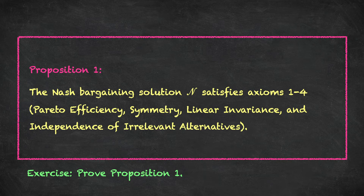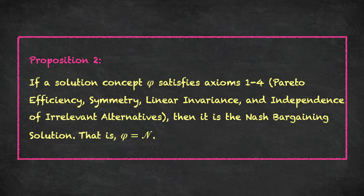What's more remarkable, however, is that not only does the Nash bargaining solution satisfy our four axioms, it is the only solution concept that satisfies those axioms. Nash's list of axioms has precisely pinned down exactly one solution concept. We'll state this as Proposition 2: if a solution concept phi satisfies axioms 1 through 4 — Pareto efficiency, symmetry, linear invariance, and independence of irrelevant alternatives (or contraction independence) — then it is the Nash bargaining solution: phi equals N.